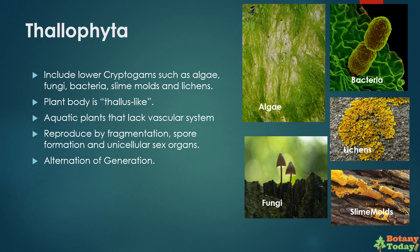Now let's see the characteristic features of thallophyta. Thallophyta include lower cryptogames such as algae, fungi, bacteria, slime molds, and lichens. They have undifferentiated plant body known as thallus. These are aquatic plants that lack a vascular system. Reproduction takes place by fragmentation, spore formation, and unicellular sex organs. They show alternation of generation.